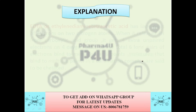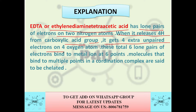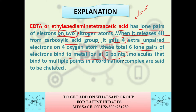EDTA, or ethylenediaminetetraacetic acid, has lone pairs of electrons on two nitrogen atoms. When it releases four hydrogens from the carboxylate groups, it gains four extra lone pairs from four oxygen atoms — giving two lone pairs from nitrogen and four from oxygen, totaling six lone pairs of electrons that bind to a metal ion at six points. Molecules that bind at multiple points in a coordination complex are said to be chelated, making EDTA a hexadentate ligand.